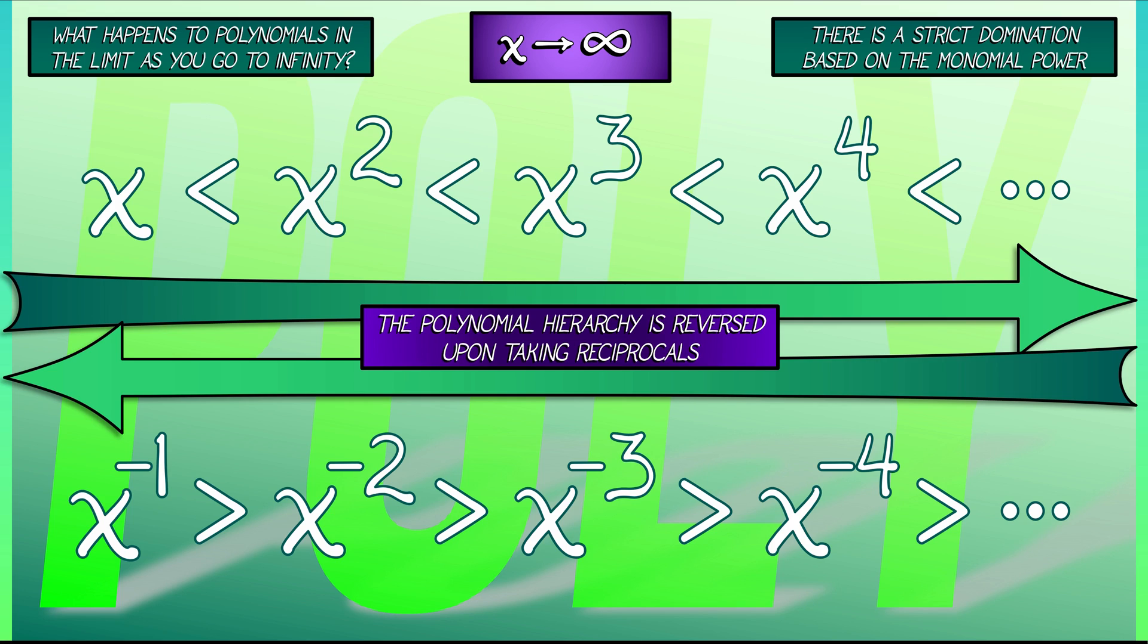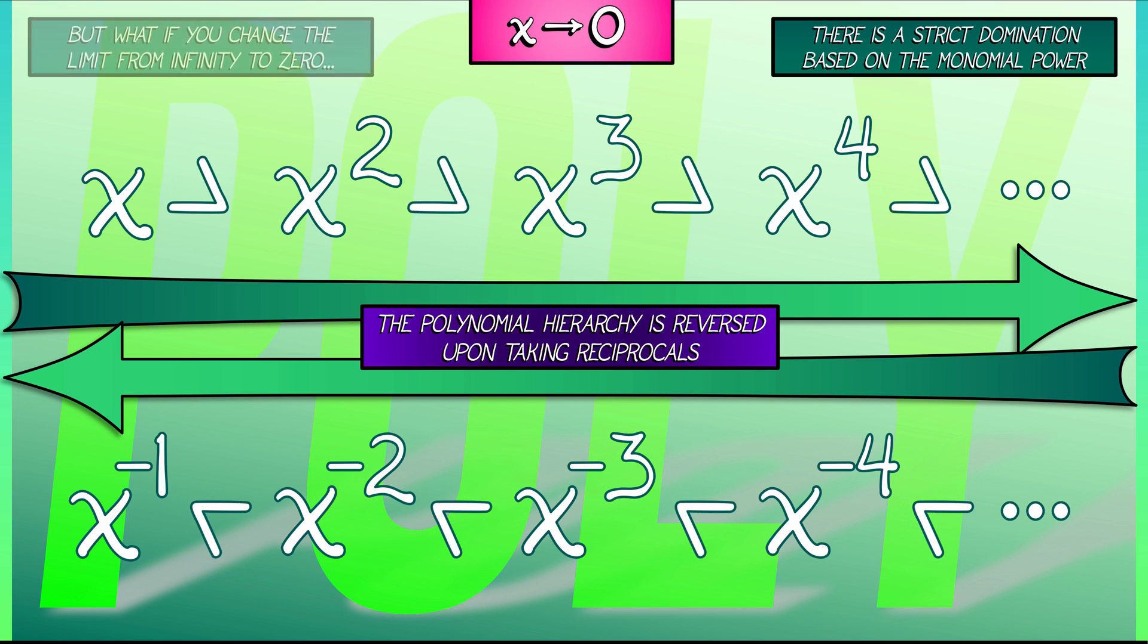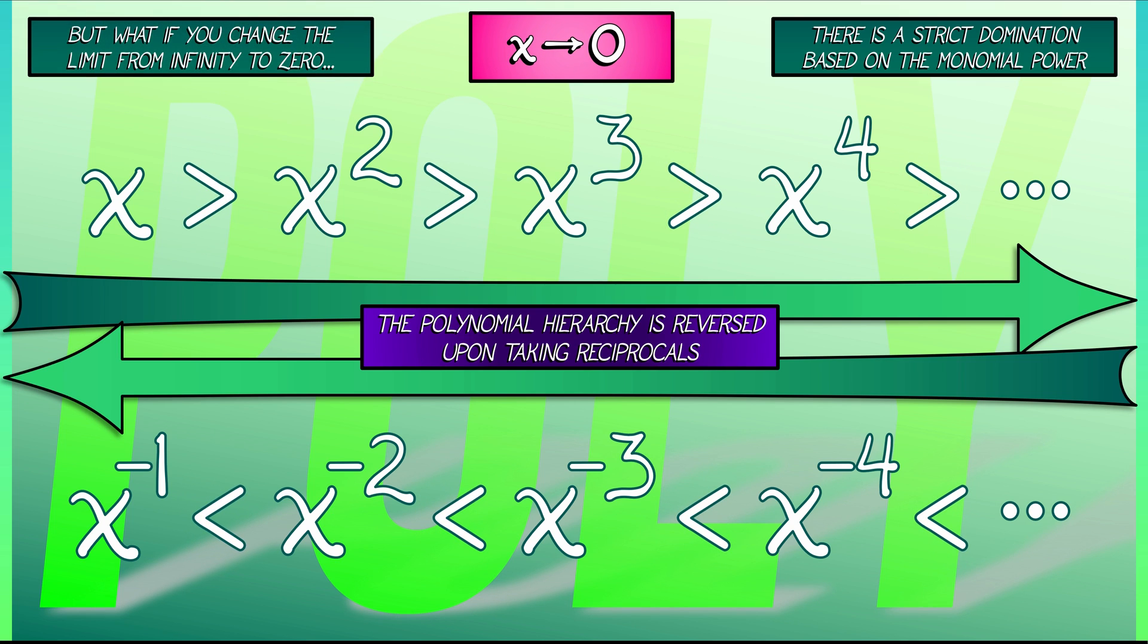What happens if instead of taking that limit, we reverse, we go to zero? So, instead of x getting larger and larger, x is getting smaller and smaller. Well, everything flips. All the inequalities are reversed in the limit. As x goes to zero, x dominates x squared, which dominates x cubed, which dominates higher and higher powers, just like we've seen when we're doing Taylor expansions.